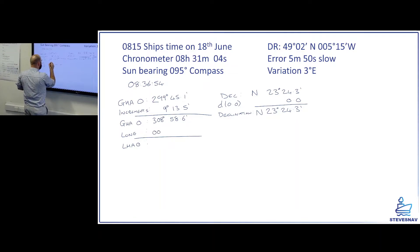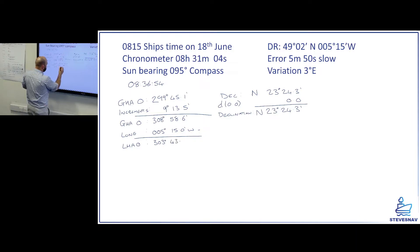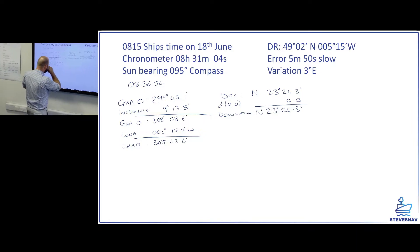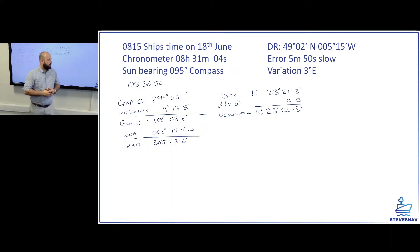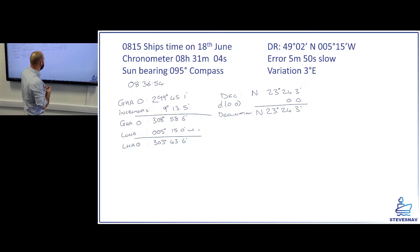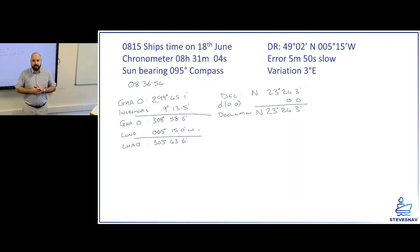So I now need to apply my longitude. Well I'm West. So West is always minus for this. If you're not sure, have a look in your almanac. It tells you on page 70 how to do that, which leaves me with an LHA of 303 degrees 43.6 minutes. So I've got an LHA of 303°43.6'. I've got a declination of North 23°24.3'. What I can do now is say right, okay, let's find my ABCs.